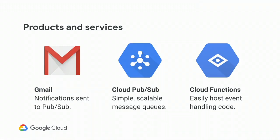In terms of the products and services we're going to use today, we're going to be using Gmail, which has this really cool feature called the Watch API. The Watch API lets you send notifications to a Cloud PubSub topic whenever you receive an incoming email. Cloud PubSub provides simple, scalable message queues, which we can then use to trigger Cloud Functions, which will host our event processing code.